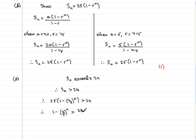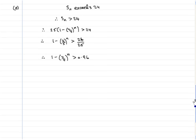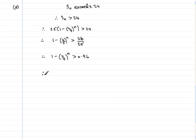That gives me 1 minus 4 fifths to the power n is greater than 24 divided by 25. 24 divided by 25 works out as 0.96. So I have 1 minus 4 fifths all to the power n is greater than 0.96. What I'm going to do now is take 1 from both sides, leaving me with minus 4 fifths to the power n is greater than 0.96 minus 1, which is minus 0.04.